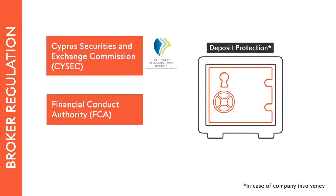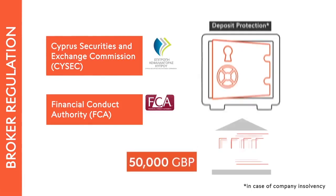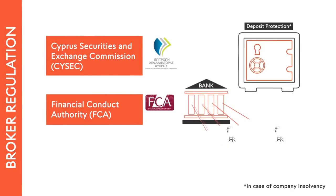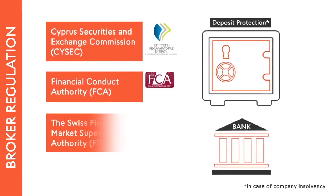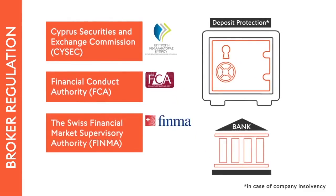Given London's position as a financial hub, the Financial Conduct Authority of the United Kingdom regulates many European brokers. The FCA is stricter and offers deposit protection of up to £50,000. In addition, it requires segregated accounts for clients' funds and has rules for faster processing of withdrawals.